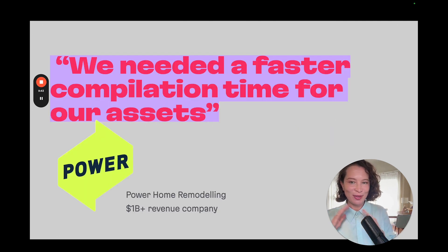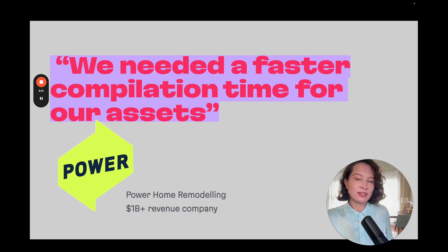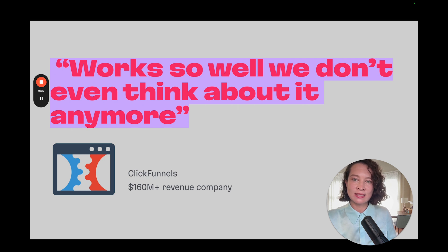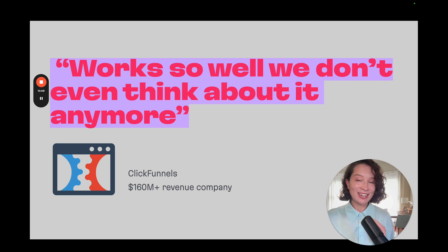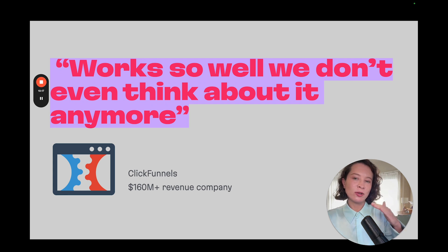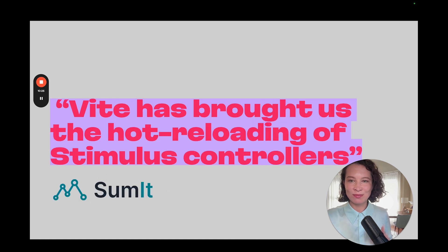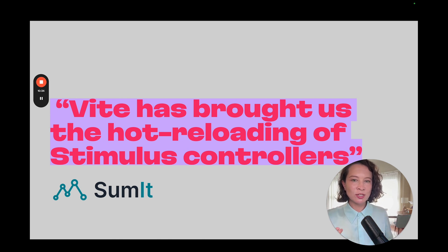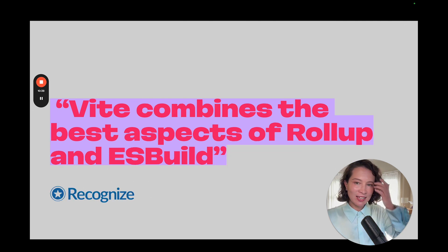PowerHome Remodeling Group is a huge billion-dollar revenue Rails company that chose Vite because they needed faster compilation of their assets — at their scale, it's super important. ClickFunnels, another over-$100-million revenue company doing marketing SaaS, has a very complex setup with different front-end technologies and approaches. They use both Vite and Vite Ruby, and the main thing they say is: 'We're not thinking about it anymore, because it just works.' This startup also says Vite brought them hot reloading for Stimulus controllers in the Rails full-stack setup.